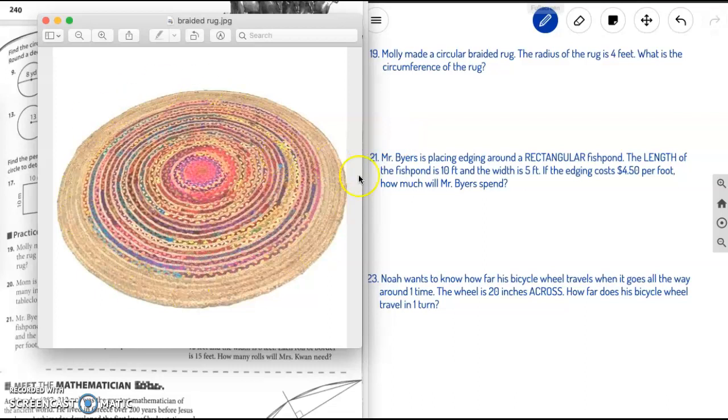Molly made a circular braided rug, could look like this. The radius of the rug is 4 feet, so we're looking at here. Not the entire line, obviously, just the radius. So the radius is 4 feet. What's the circumference of the rug? So we're trying to find the measurement around this rug.